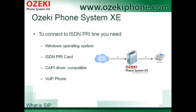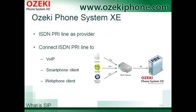As you can see in the picture, you can establish a connection between an ISDN PRI line and a VoIP phone via Asakifon System Xe. Asakifon System Xe is a market-leading, new-generation IP phone system. You can set up your PRI line in Asakifon System Xe as a voice provider via a CAPI compatible ISDN PRI card.